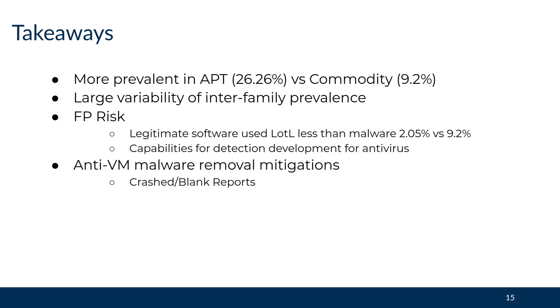The takeaways of our research are that we discovered an overall prevalence of 9.6% living off the land techniques averaged across all commodity malware datasets, compared to the far higher prevalence in APT malware datasets at 26.26%. We also discovered large variability across different families of malware and a high false positive risk when detecting use of these binaries. The differences give the capability to develop detection algorithms, such as those we assisted with through responsible disclosure to antivirus firms, especially Kaspersky and Sophos. We adhered to the three critical assessment criteria in Brasso's 2012 paper, Prudent Practices for Malware Experiments: correctness, transparency, and realism.